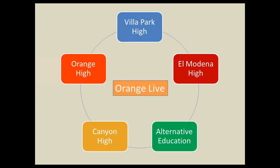Students participate in these online courses from all four of our comprehensive high schools as well as our alternative ed high school. Each high school gives four sections to the program, and they're allowed to enroll up to 15 students per section. Most courses are at about 30 students — capping them as we would in a face-to-face class. Any student at any of our high schools can access any of these courses, which has been a real plus and makes the program sustainable.